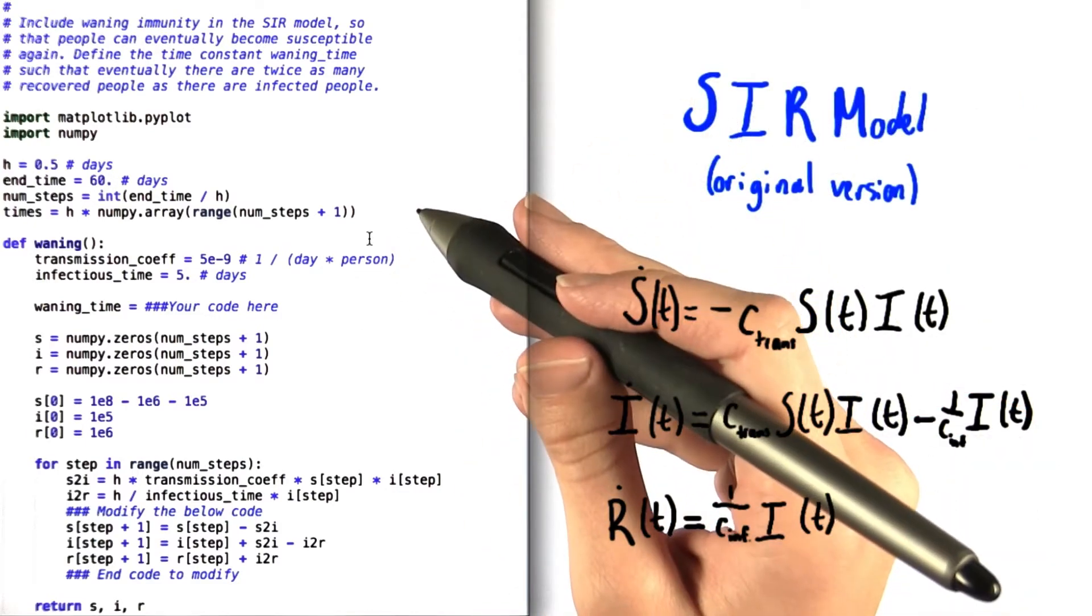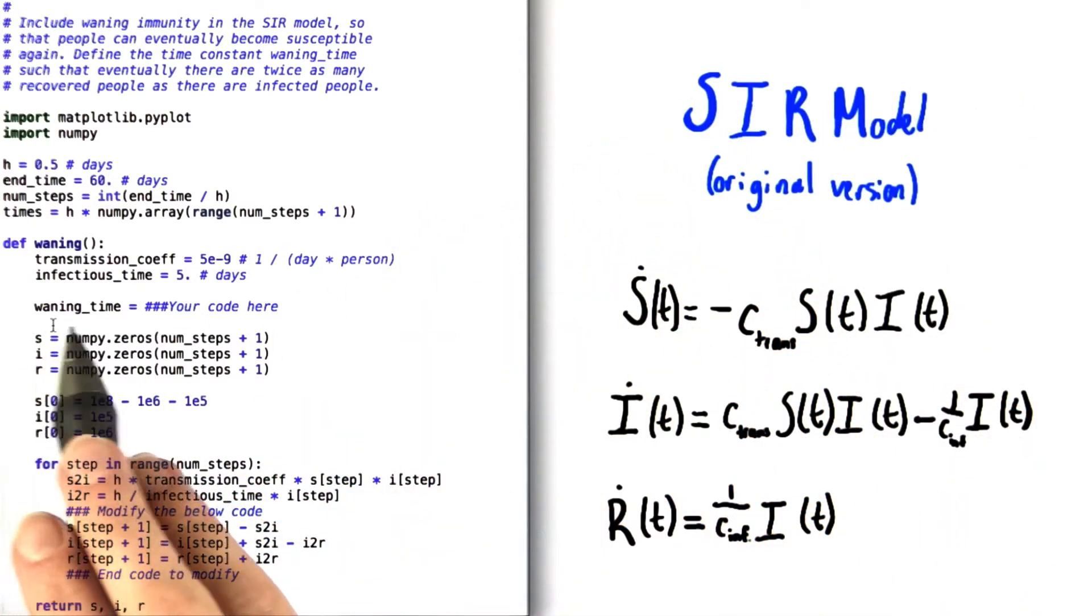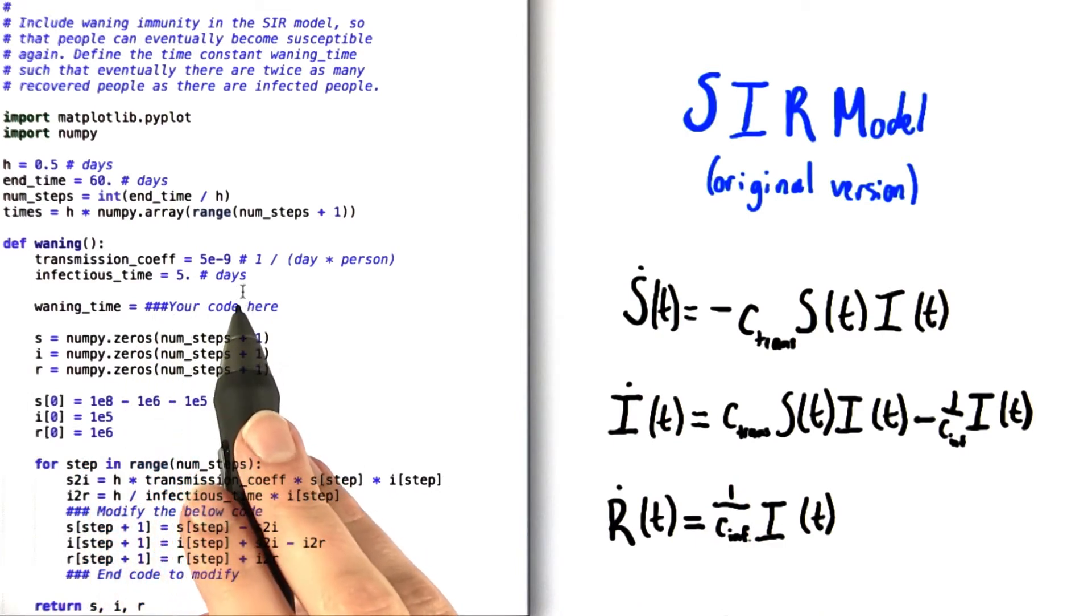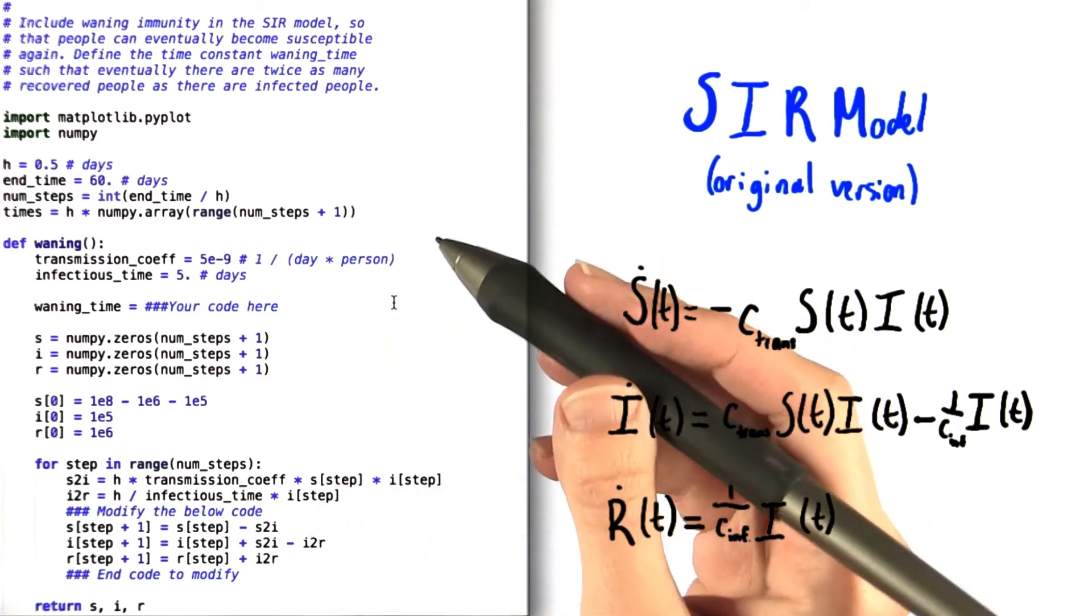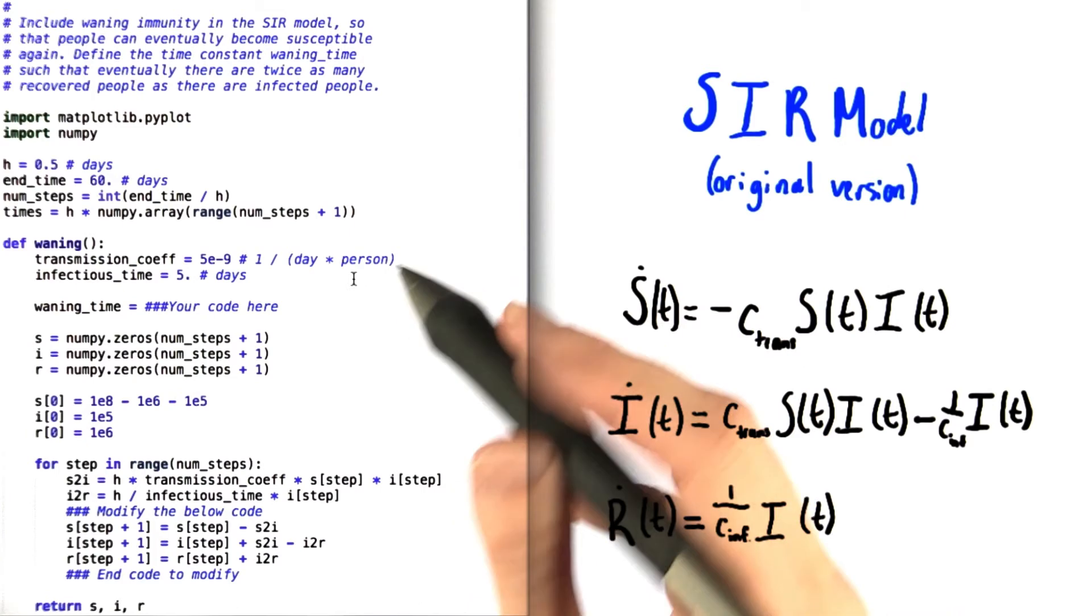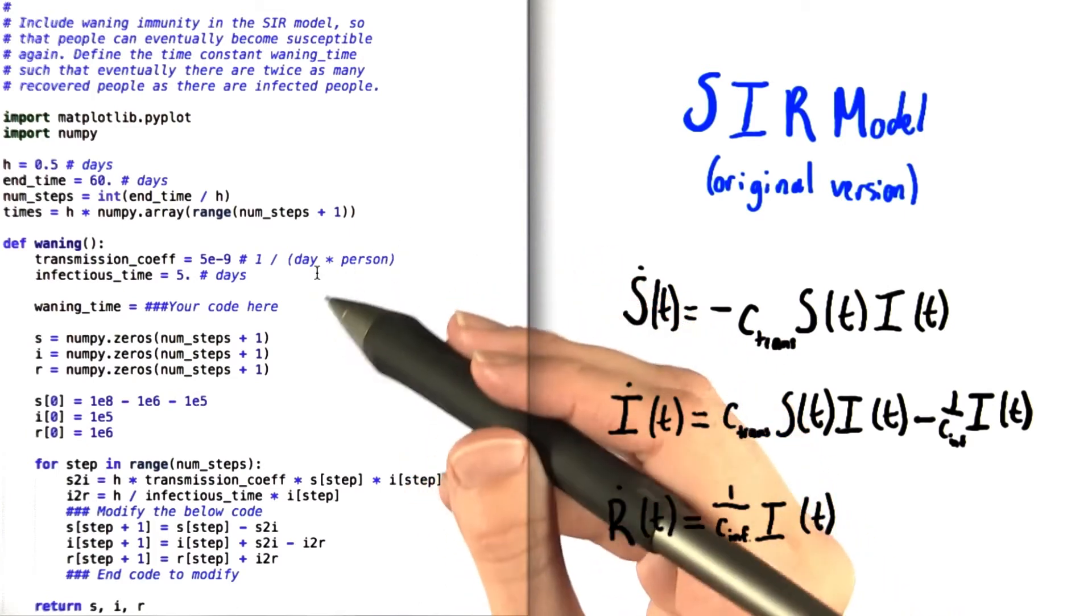Now the first thing that we want you to do is to define waning time, right here, so that eventually we have a system in steady state where the number of recovered people is equal to two times the number of infected people. So think about what this means in terms of the time that people should spend infected versus the time that they should spend recovering.